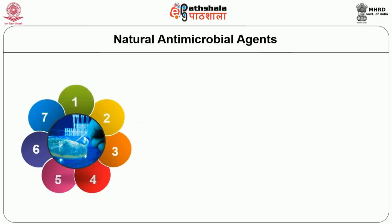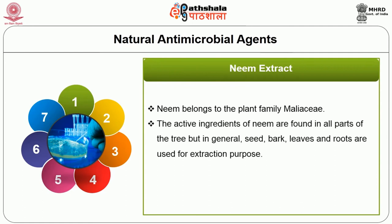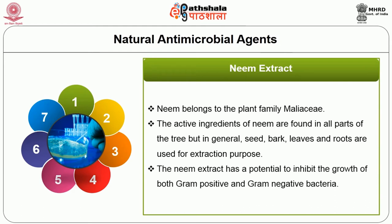The first example is neem extract. Neem belongs to the plant family Meliaceae. The active ingredients of neem are found in all parts of the tree, but in general, seed, bark, leaves and roots are used for extraction. The neem extract has the potential to inhibit the growth of both gram-positive and gram-negative bacteria.